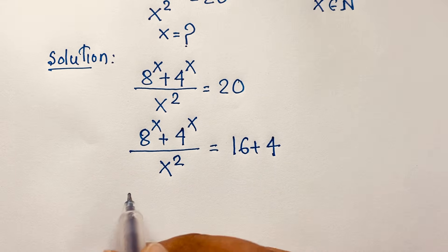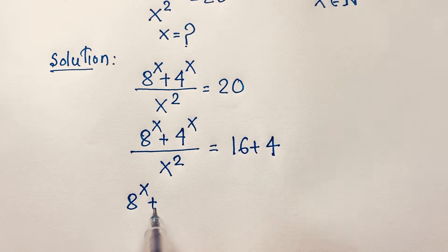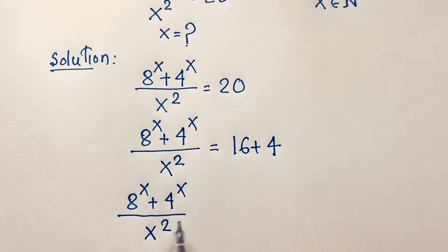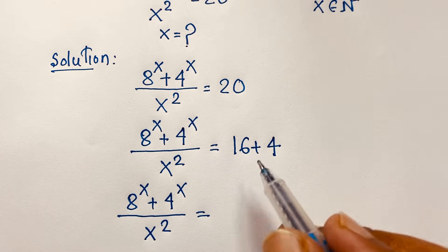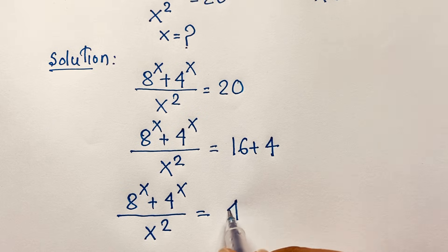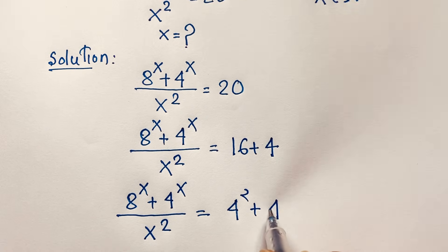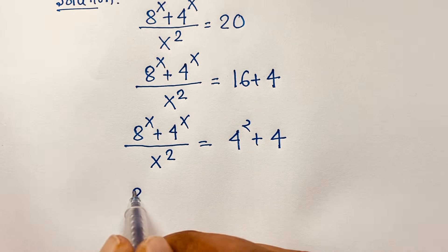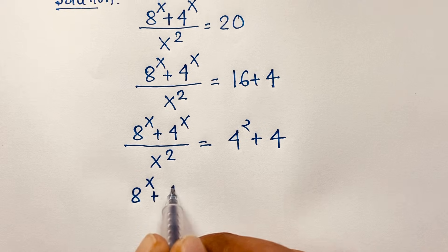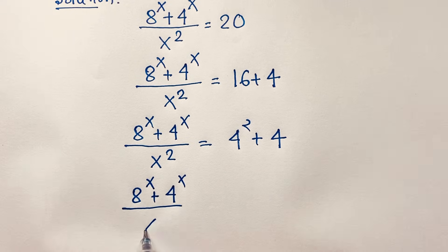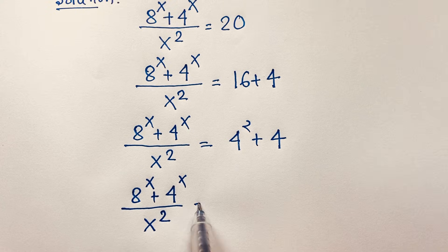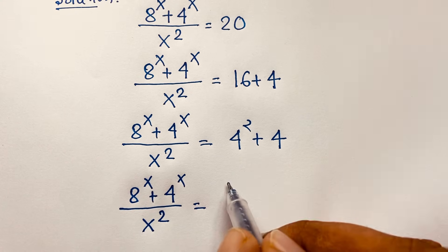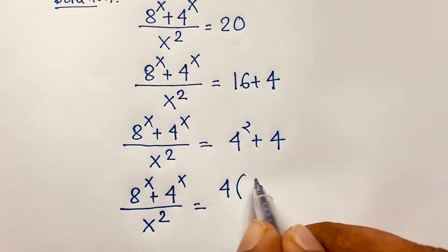So we have 8^x plus 4^x over x squared. Now 16 can be written as 4 to the power 2. At this moment, I multiply the denominator by 4 and also divide by 4, so the denominator becomes 4 times 4.